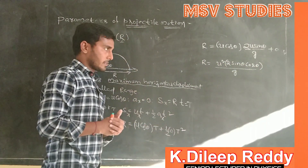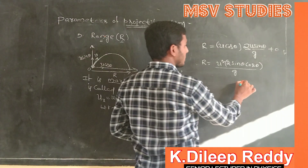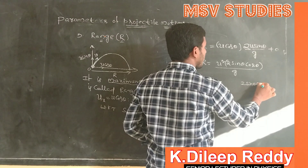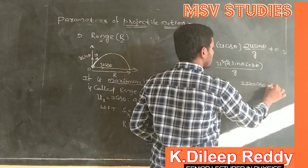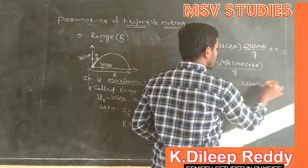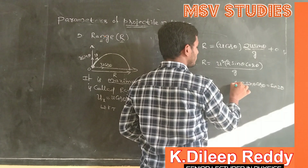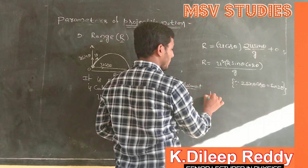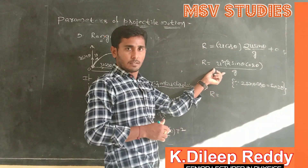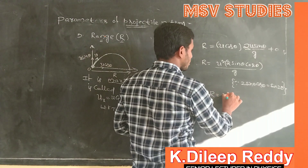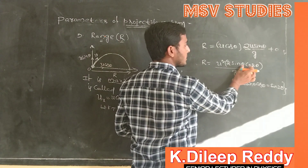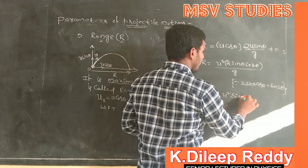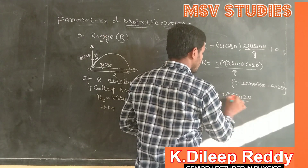Using the trigonometric identity 2 sin theta cos theta = sin 2theta, we can simplify the range expression. Therefore, range R = u² sin 2theta / g. This is the expression for range of the projectile.